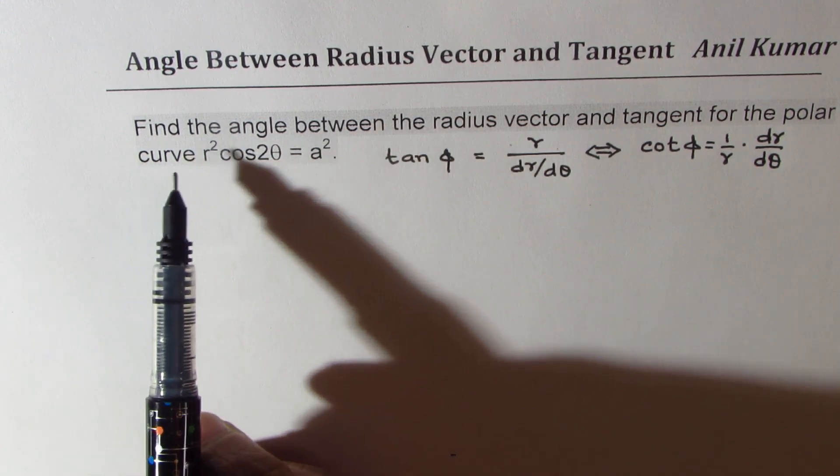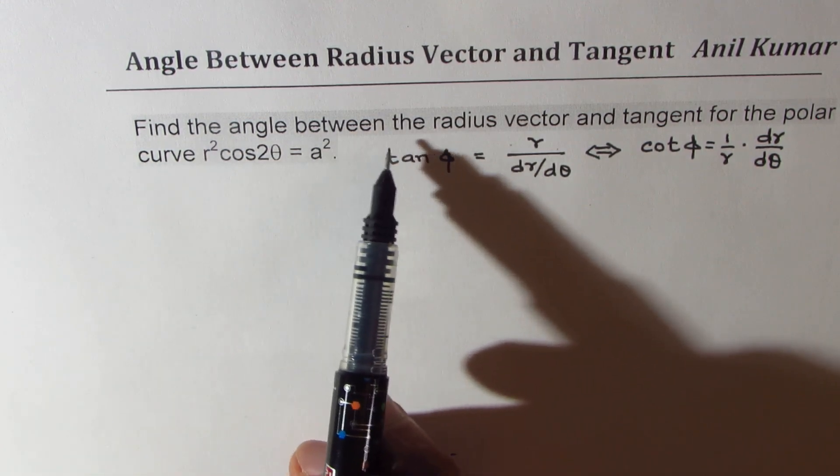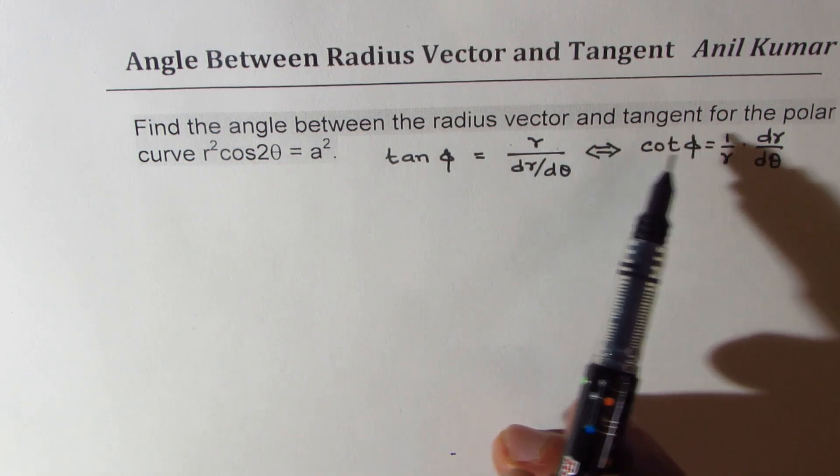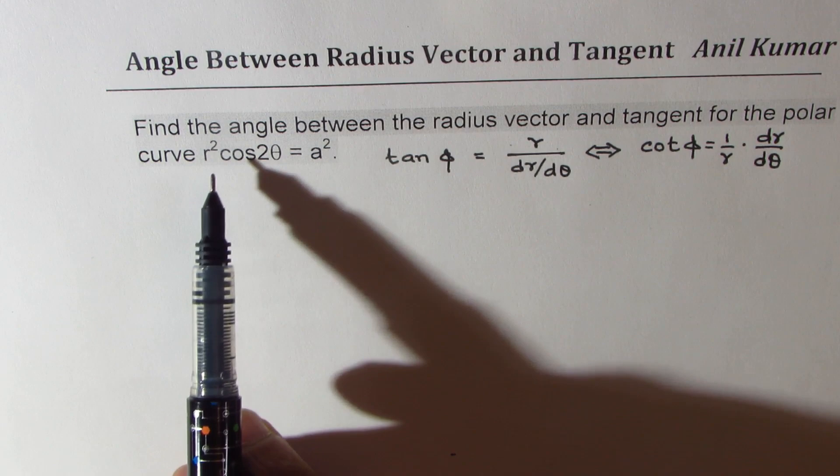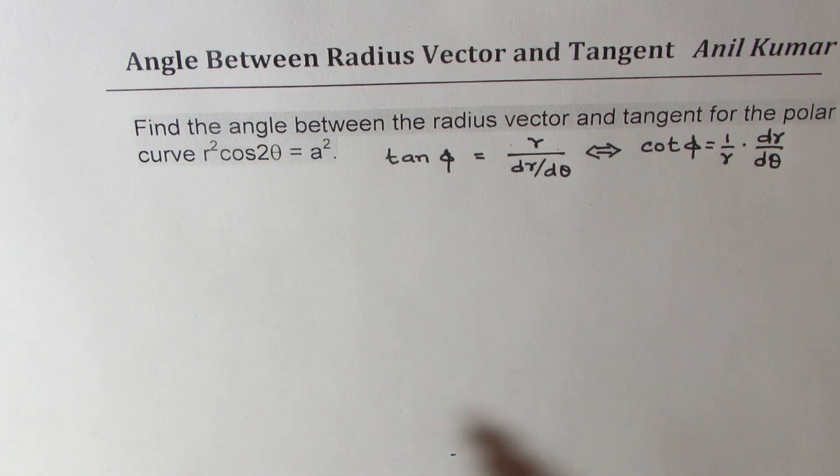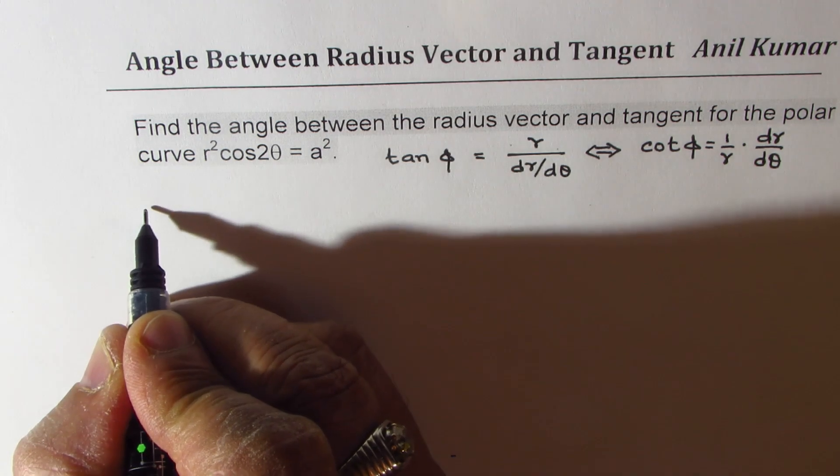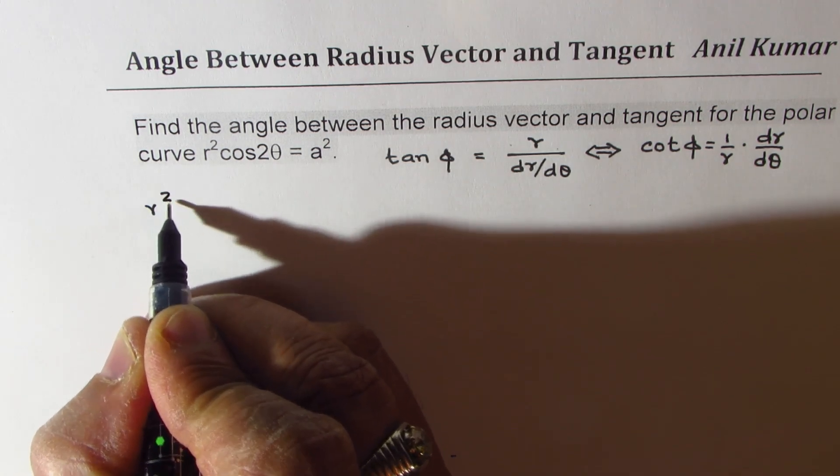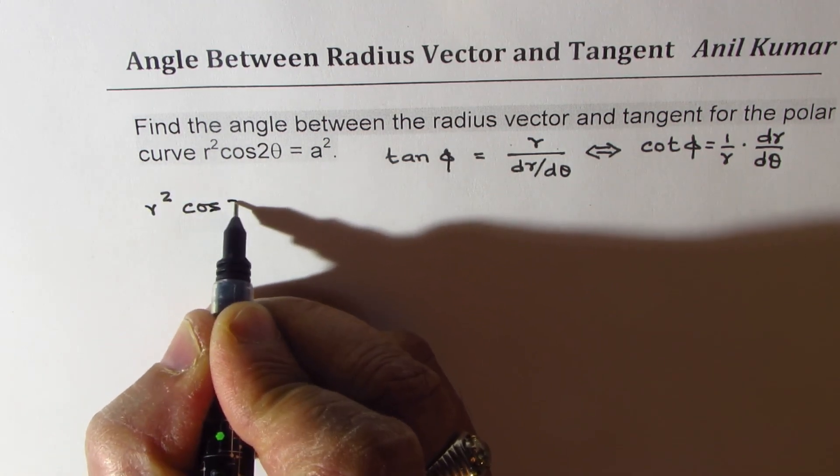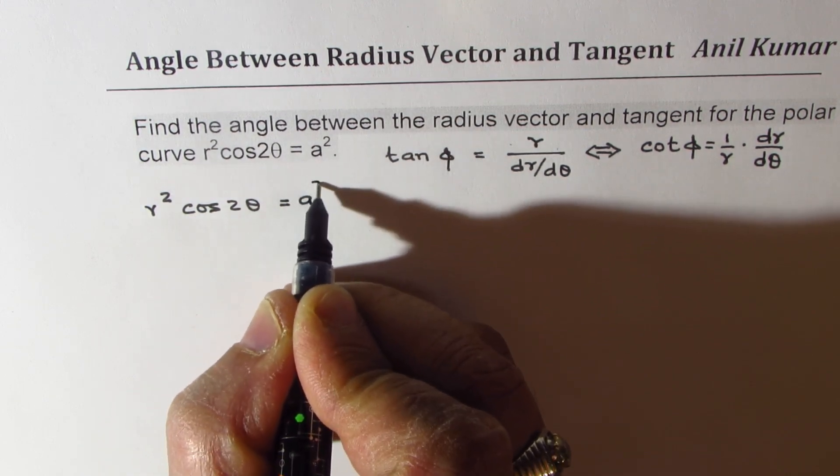The question here is find the angle between the radius vector and the tangent for the polar curve r² cos 2θ = a². So the curve given to us is r² cos 2θ = a².